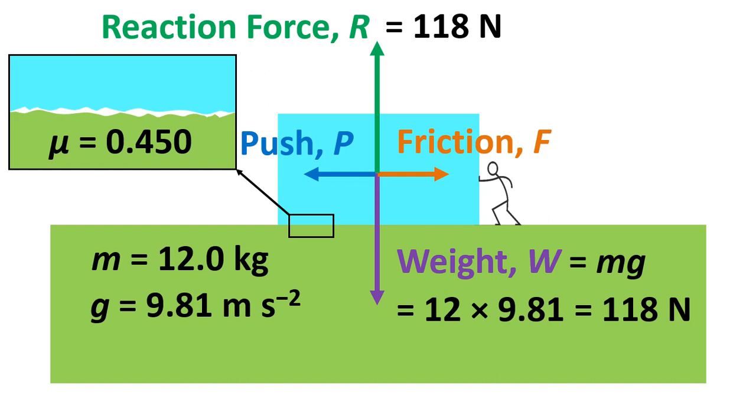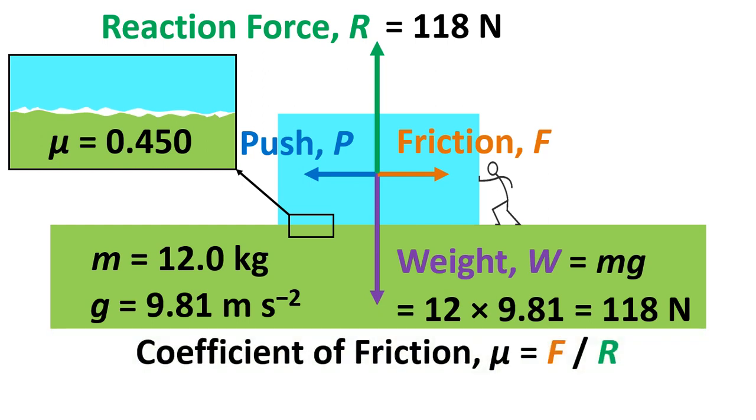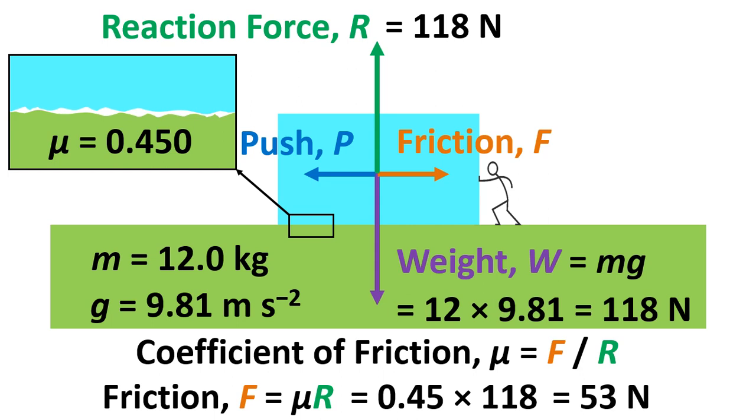What the maximum frictional force will be as the object is being pushed. So the coefficient of friction equals F divided by R, so R being the reaction force, F being the maximum frictional force before the object starts to move. And so we can rearrange that equation and work out that the frictional force will be 53 newtons.